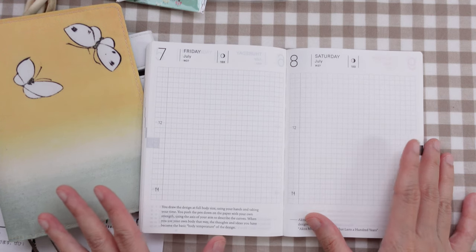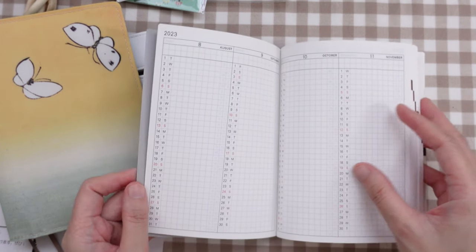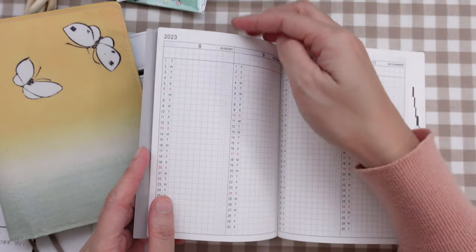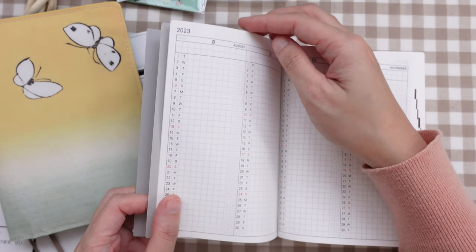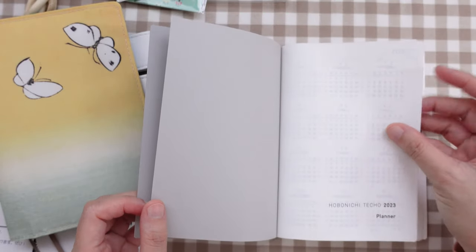So I got the English version because I wanted to be able to read the quotes on every page. My Japanese reading is not that good, and I won't be able to read the kanji. So in order to fully appreciate the planner, I decided to get the English version.